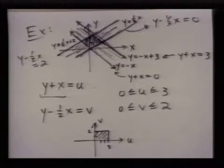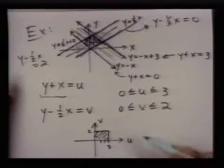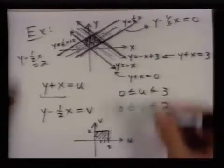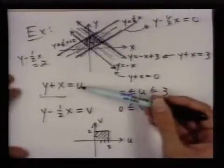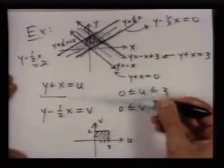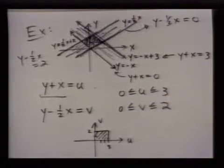And the actual change of variables, so the formula that takes you from a point here to a point here, we'd have to solve for that because right now we just have expressions for u and v, not x and y, which we had before.